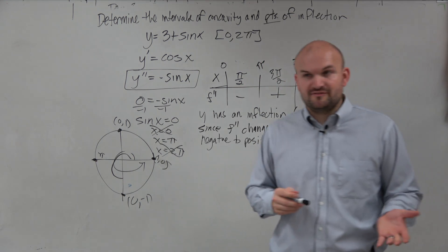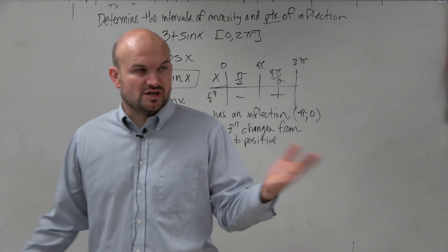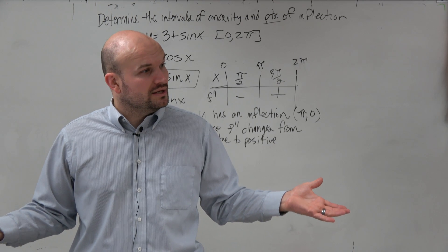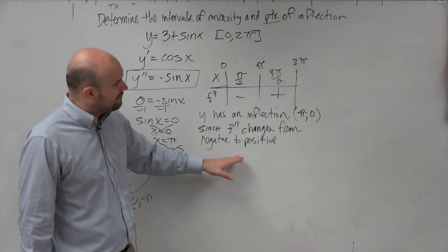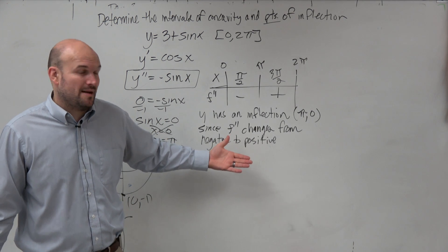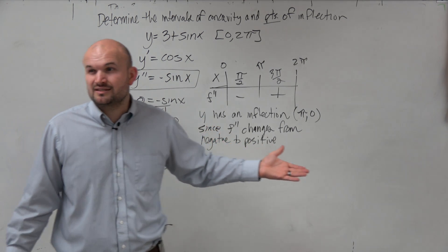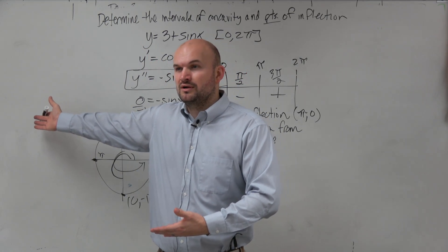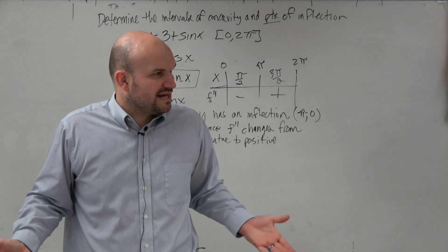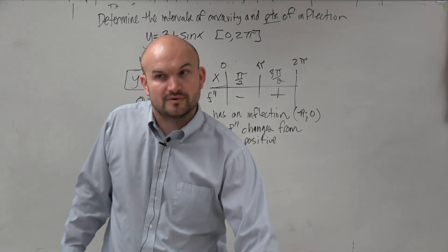Y has an inflection point at pi comma 0, since f double prime changes from negative to positive. It's not really important if it's changing from positive to negative to negative to positive, because all we're doing is asking for concavity. So it's not as important to do it, but I would prefer that you just write it out. It's in good habit to write that out, rather than saying the sign changes.